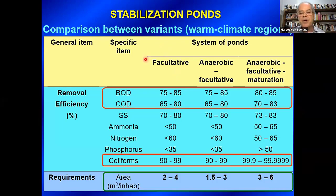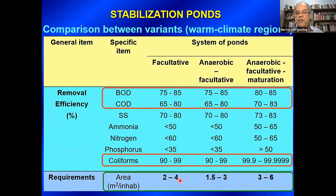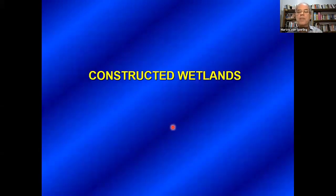This is a summary of typical removal efficiencies for the main pond arrangements in terms of BOD, COD, and coliforms. The removal efficiencies are not spectacular — in the range of 75% to 85% for BOD, slightly less for COD. We are not able to remove suspended solids and nutrients well in these typical arrangements, but we are able to remove coliforms very well, especially if we incorporate maturation ponds. Land requirements in warm climate countries are between two to four square meters per inhabitant for a facultative pond, and more if maturation ponds are incorporated.